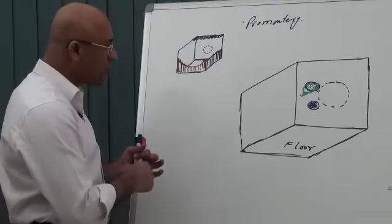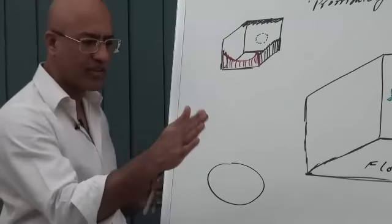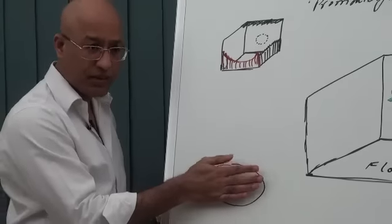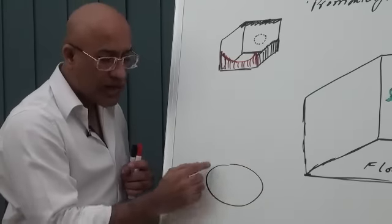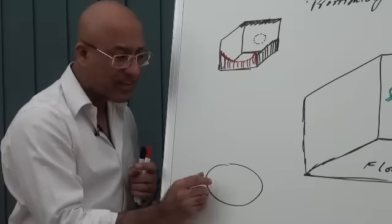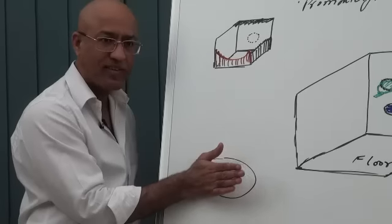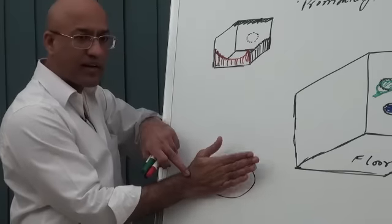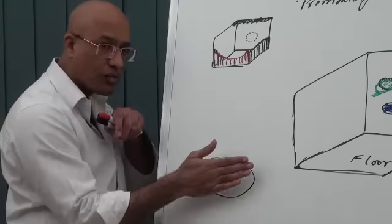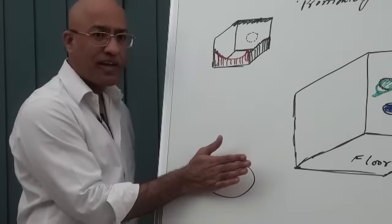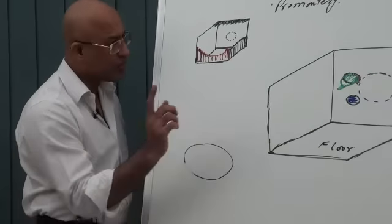Stapes does not move like a piston; it moves in a slightly different way. The posterior part of the annular ligament is shorter and thickened, so stapes is more tightly fitting into the posterior wall than the anterior side. Actually it vibrates like this: the movement in the posterior part of the stapes is less, and movement in the anterior part is more. So stapes does not move like a piston — it moves like a door, hinged on the posterior side of the window and moving to and fro.